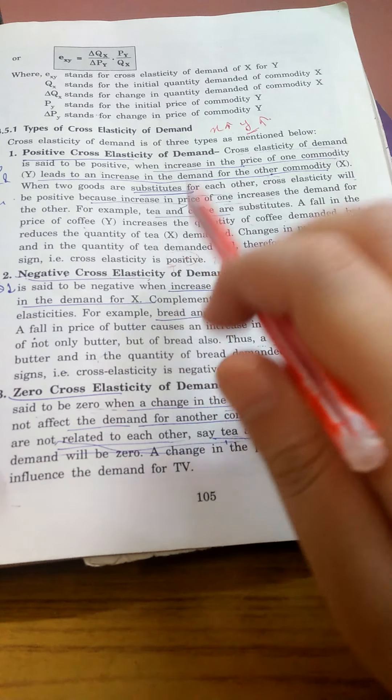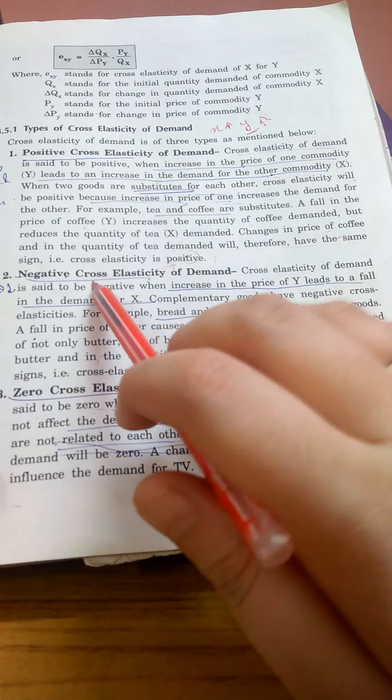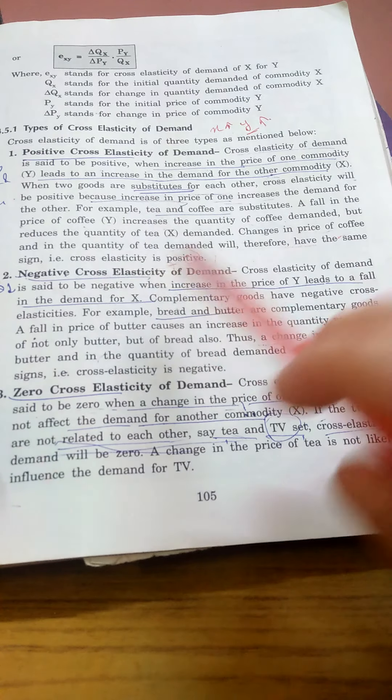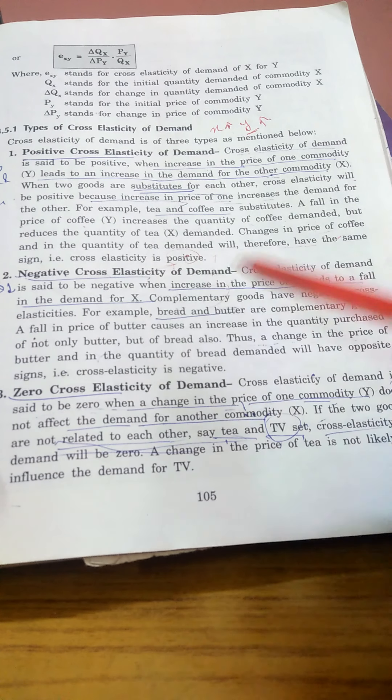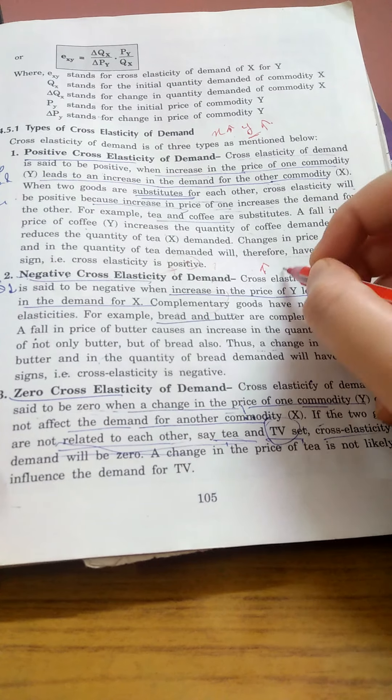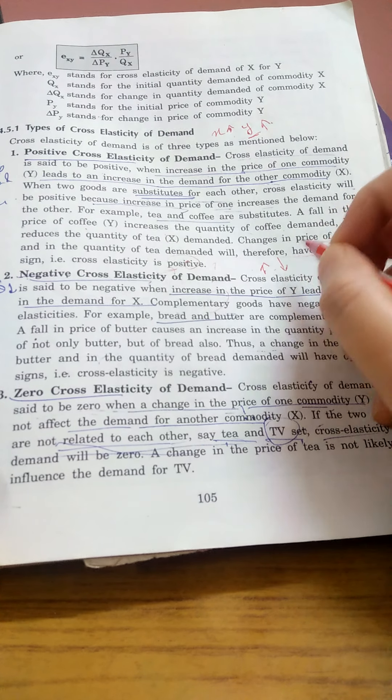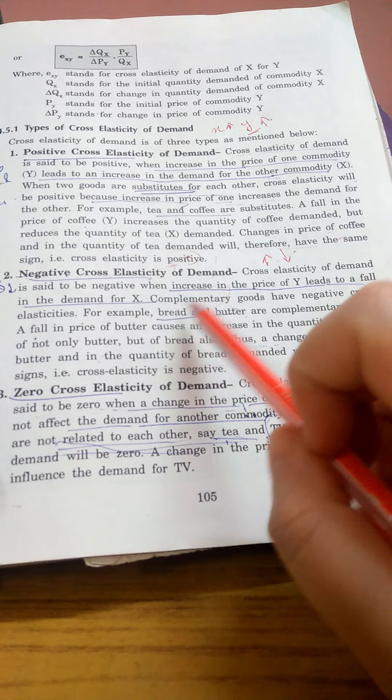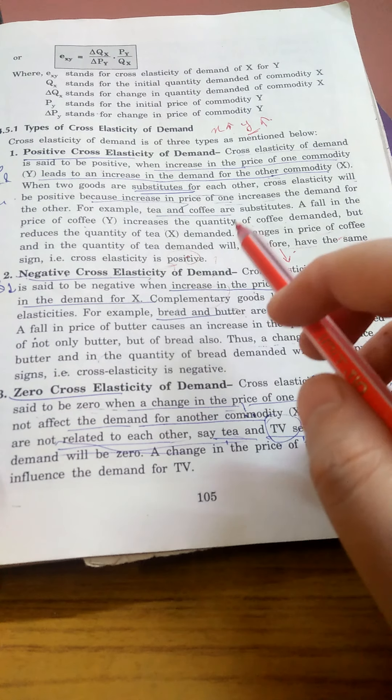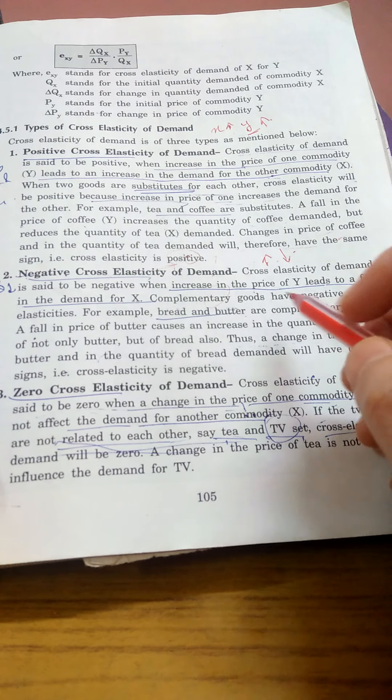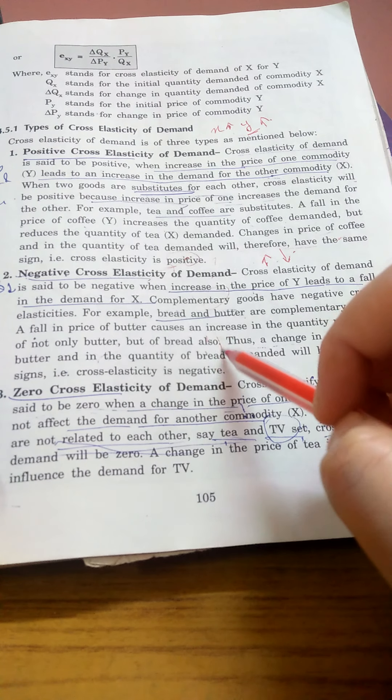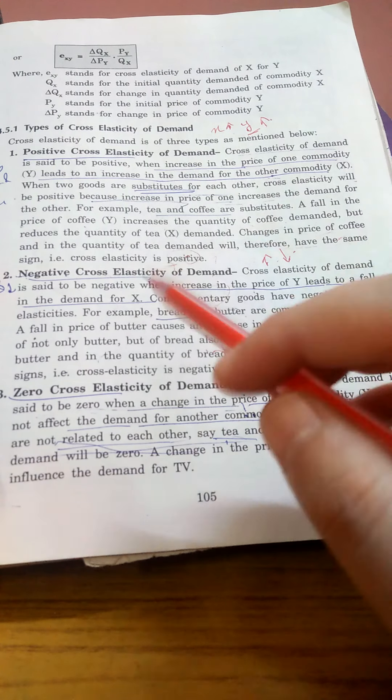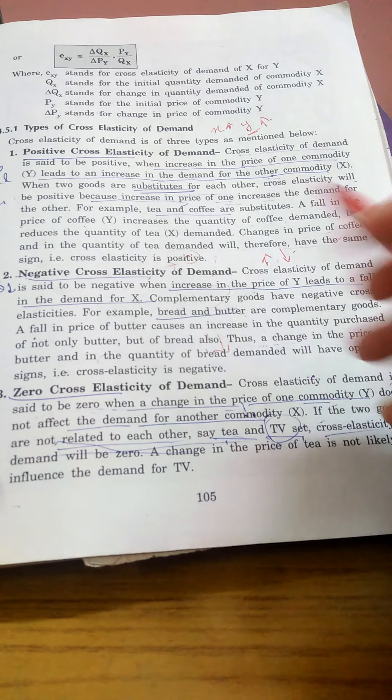Second point is negative cross elasticity of demand. Here the relationship between both commodities is negative, meaning if price of one commodity increases, the other's demand will decrease. For example, complementary goods like car and petrol. If car prices rise, petrol demand will obviously decrease because people won't purchase cars, so they won't use petrol either.